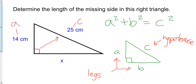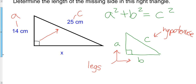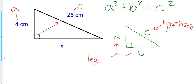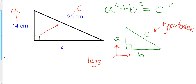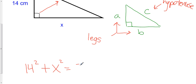We're going to take the information we've been given and plug it into the Pythagorean theorem. So we have 14 squared plus x squared is going to be equal to 25 squared.